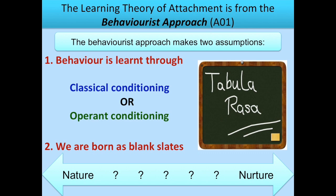As a baby, when you're born, there is absolutely nothing there — you have to learn all behaviour. The behaviourist approach says all behaviour is learned. You are not born with an innate knowledge or desire to attach to your primary caregiver, or with a personality, a sense of humour, or intelligence. Babies are born as a blank slate. So, in terms of the nature-nurture debate, which side do you think the behaviourist approach falls on?